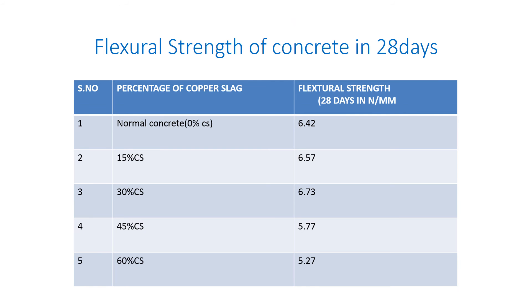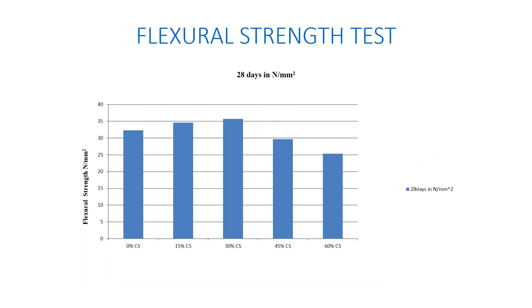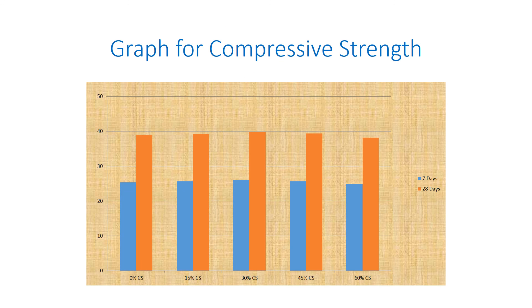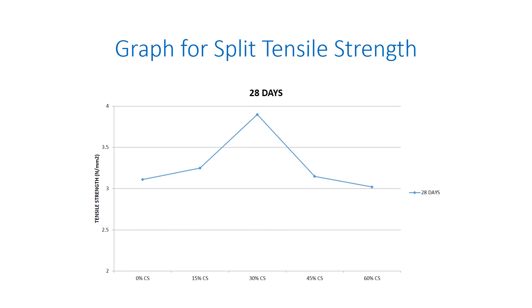For 30% copper slag concrete, the split tensile strength is 3.39, which is the optimum for strength of concrete at 28 days. This graph shows the fluctuation of split tensile strength across the various replacement percentages.